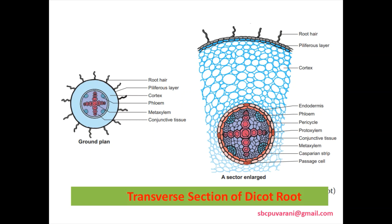Transverse section of dicot root: epidermal cells are not cutinized. Epidermal cells contain long, typically unicellular trichomes. The cortex is made up of thin-walled parenchymatous cells with chloroplast, which converts sugar into starch grains. The last layer of the cortex is the endodermis. The vascular bundles are radial in roots. Xylem and phloem are separated by conjunctive tissues. The pith is absent in the dicot root system.